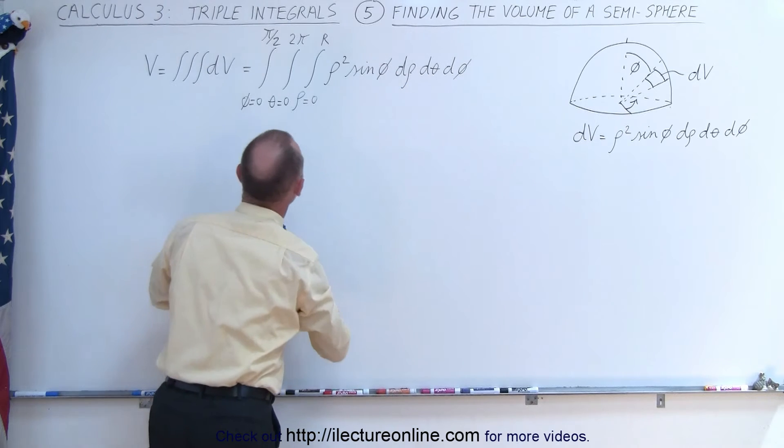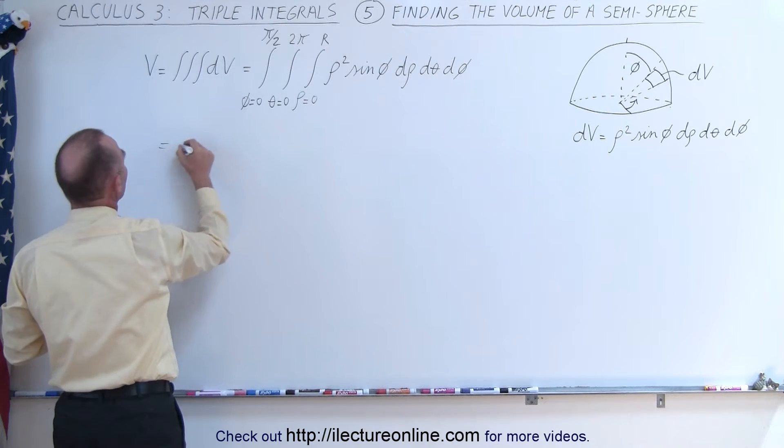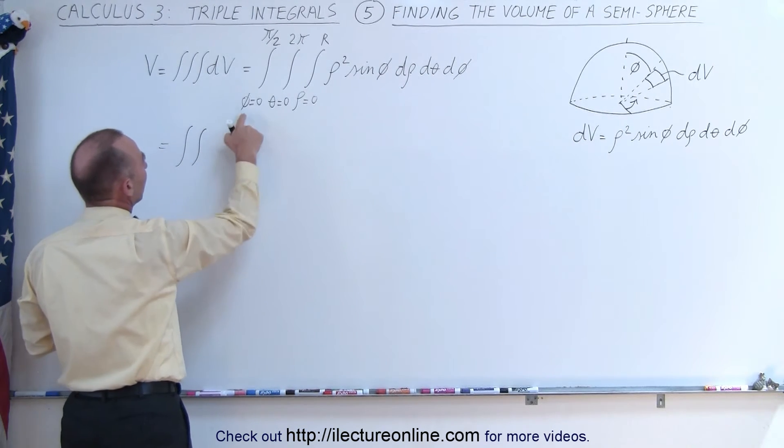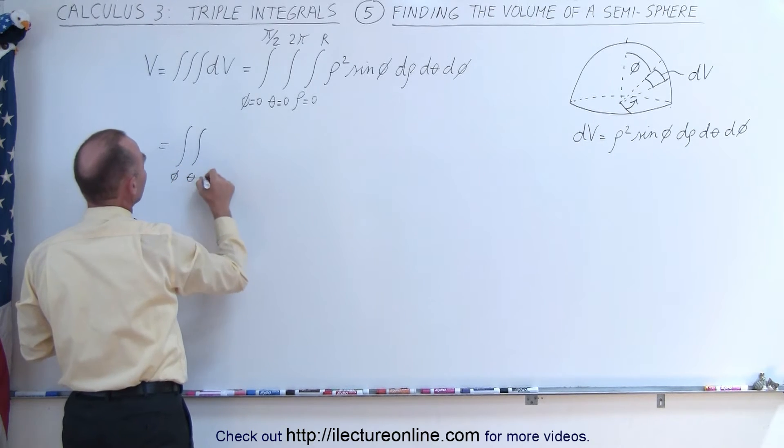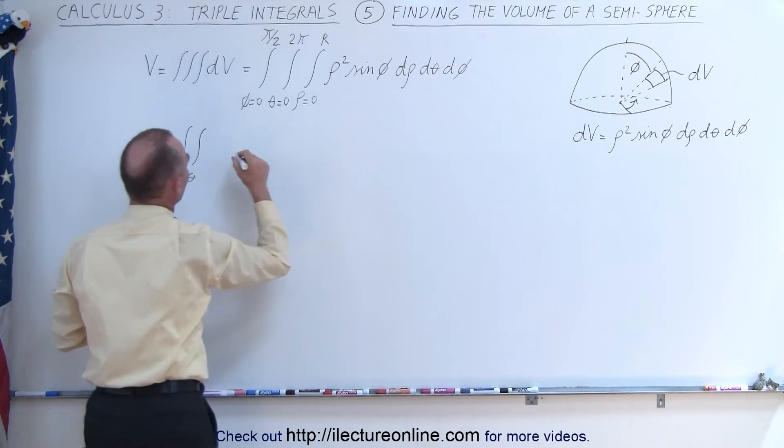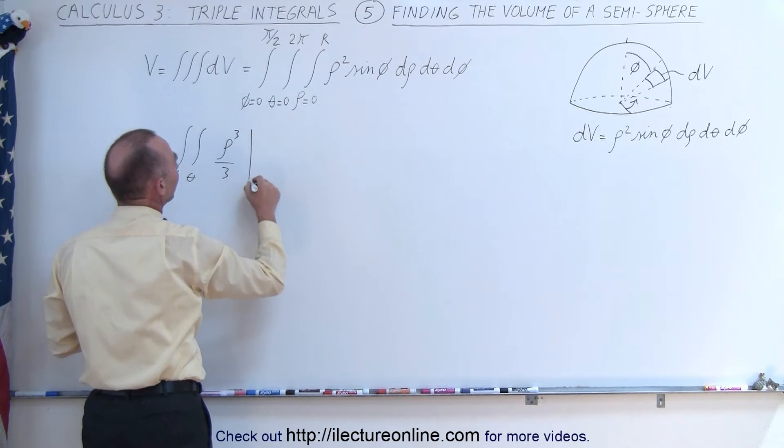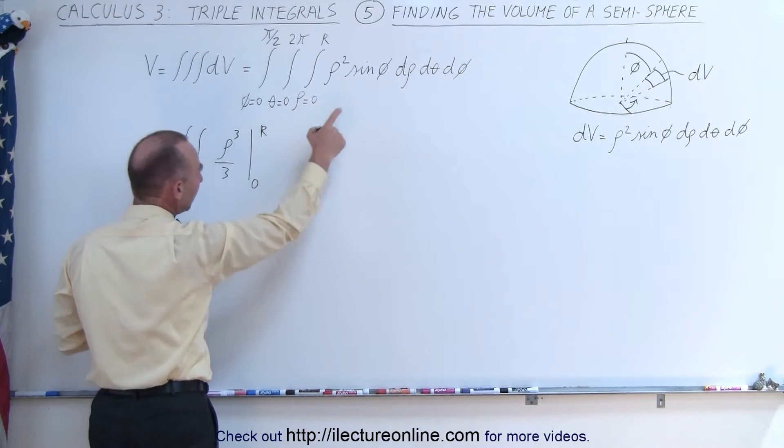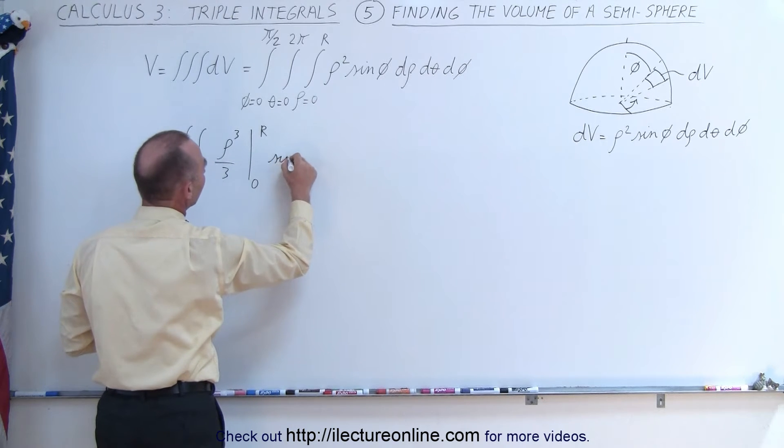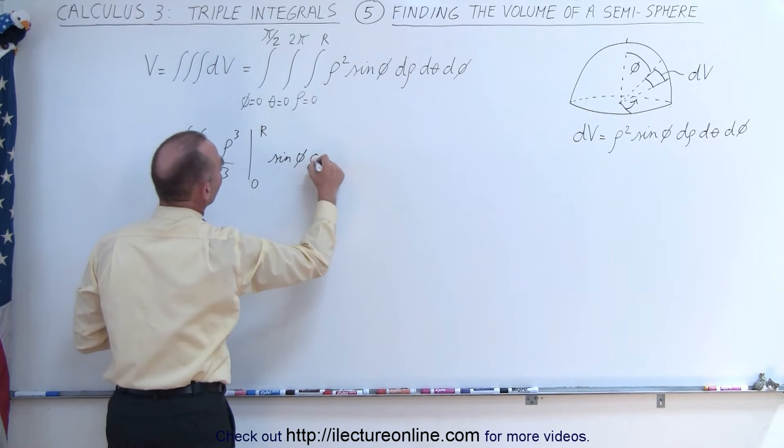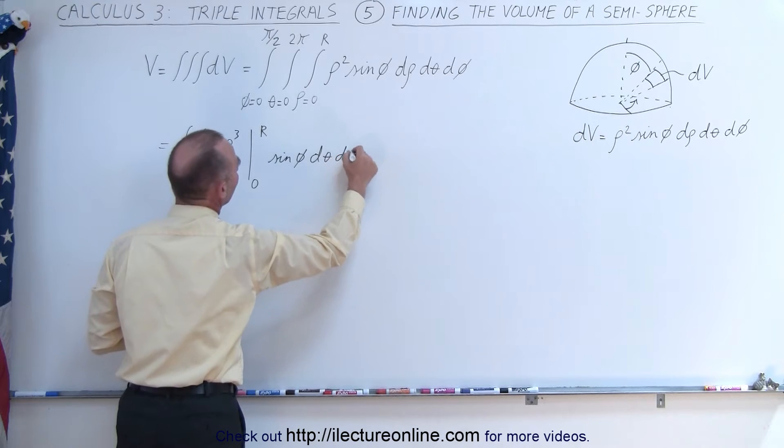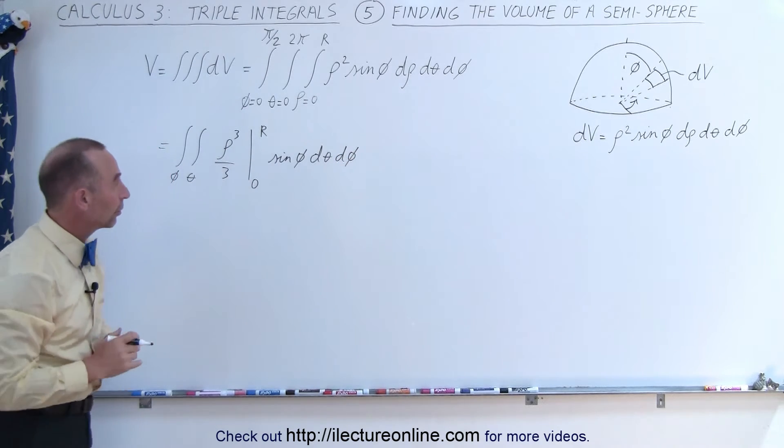We're going to leave everything else as a constant, so this is going to be equal to the double integral that's remaining over phi and over theta, and rho is now going to be rho cubed over 3, evaluated from 0 to r. We still have the sine of phi, we still have the d theta and the d phi for the next two integrals.